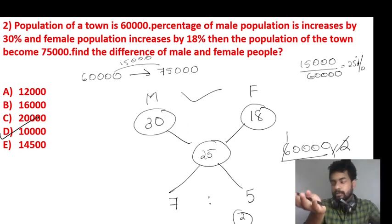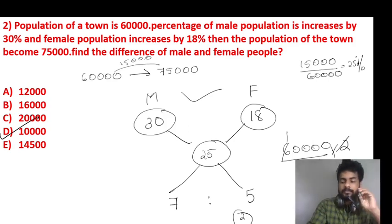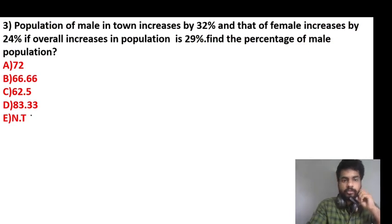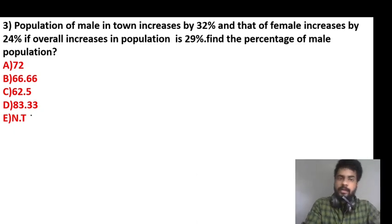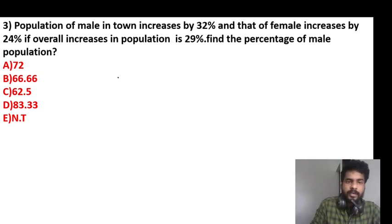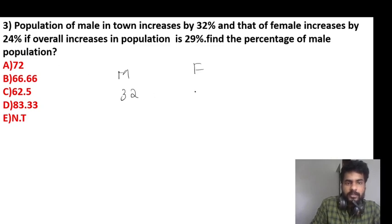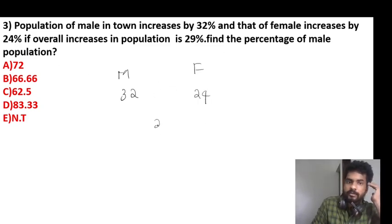Next question. Population of a town — male in town increases by 32 percentage and that of female increases by 24 percentage. If overall population increases by 29 percentage, find the percentage of male population. Same model: male 32, female 24, overall population is 29 percentage.